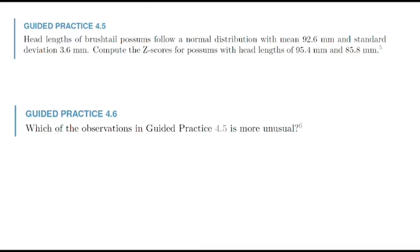Head blinks of a brush-tail possum follow a normal distribution with a mean of 92.6 millimeters and a standard deviation of 3.6. Calculate the z-scores for the two given values. I'll give you a couple minutes before I walk through those.